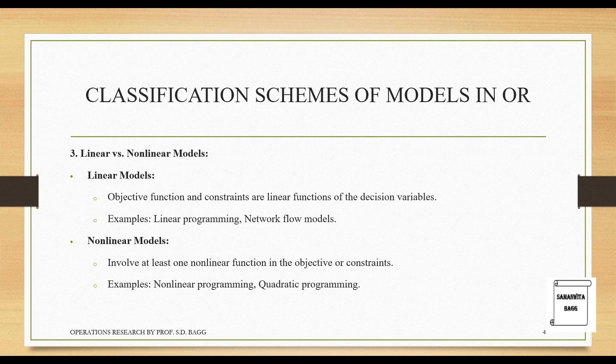Linear versus non-linear models: in linear models, the objective function and constraints are linear functions of the decision variables. Examples include linear programming and network flow models. Non-linear models involve at least one non-linear function in the objective or constraints. Examples are non-linear programming and quadratic programming, where both the objective function and constraints are non-linear.